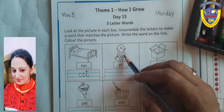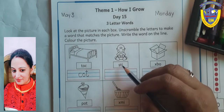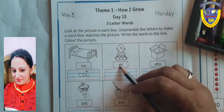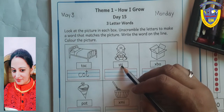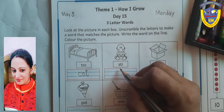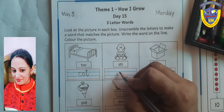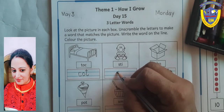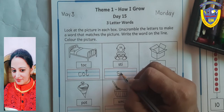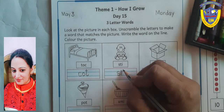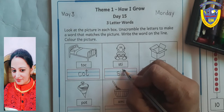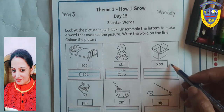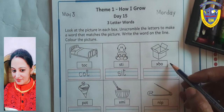Next picture. This is sit. How will we write? First we write S-I-T. Sit.